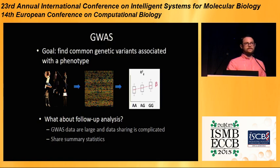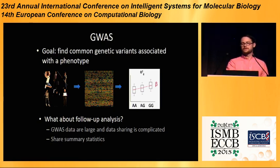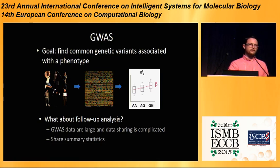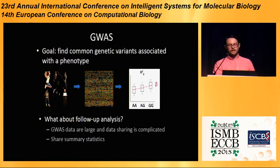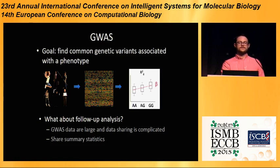You're probably all familiar with the standard GWAS pipeline, where the goal is to find common genetic variants that are associated with the phenotype. It starts by sampling individuals, doing genotyping, and then for each genotype, doing a linear logistic regression against the phenotype to compute the effect size. This works rather well, but a lot of times you want to do follow-up analysis, and this is complicated by many factors. In particular, GWAS data are very large, so sharing them takes some time and running analysis on full-scale genotype data with millions of SNPs and hundreds of thousands of individuals is extremely time-consuming.